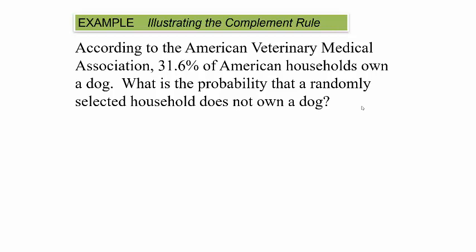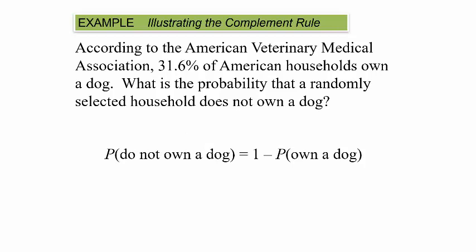According to the American Veterinary Medical Association, 31.6% of American households own a dog. What is the probability that a randomly selected household does not own a dog? The probability of not owning a dog is 1 minus the probability of owning a dog: 1 minus 0.316 equals 0.684. This is a pretty intuitive rule, but it will be very useful when we work some of the harder problems later.